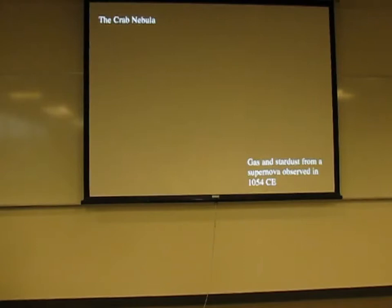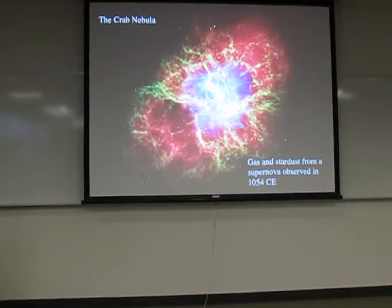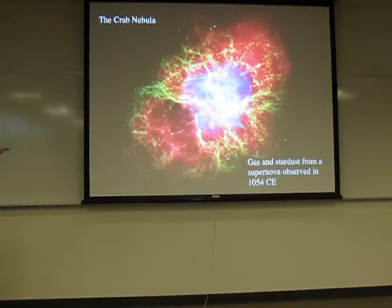Here is the Crab Nebula. About 1054 in the Common Era, Chinese astronomers observed a new star in the sky — it lasted for a few weeks. This is the remains of that star. All of this material is being blown away from that supernova explosion. The yellow is things like oxygen, the red is dust, and the bluish color is X-rays being given off. All of this stuff coming out of just one star — and yet there are a hundred billion stars in our galaxy, and every one of them is eventually going the same way.